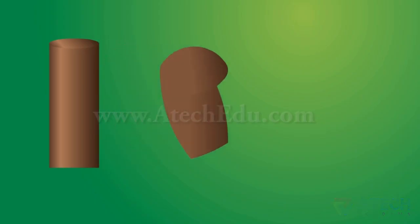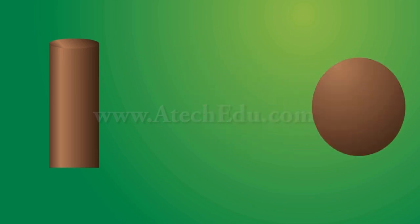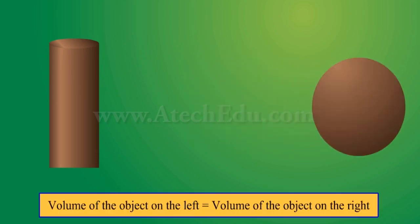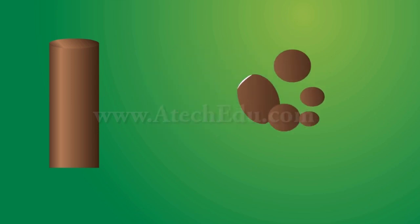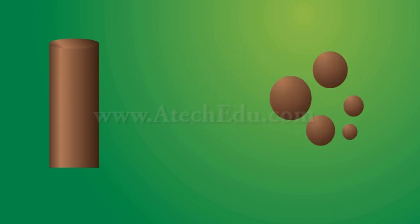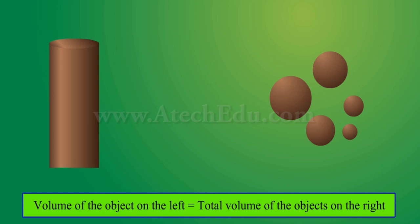Whenever an object is converted to another object, the volume of the object on the left is equal to the volume of the object on the right. In case an object is converted into many objects of the same or different shapes, then the volume of the object on the left is equal to the total volume of the objects on the right.